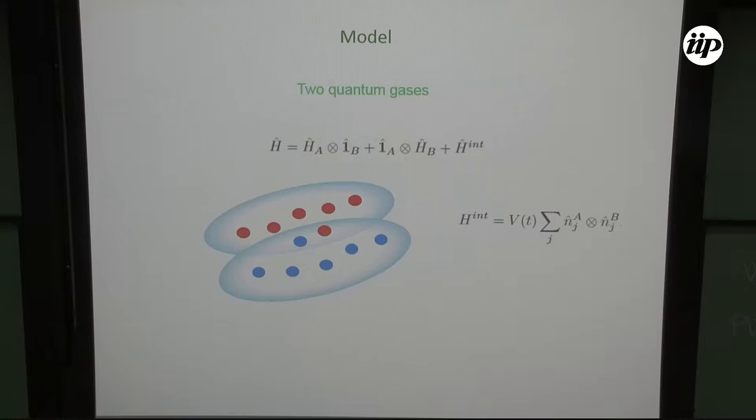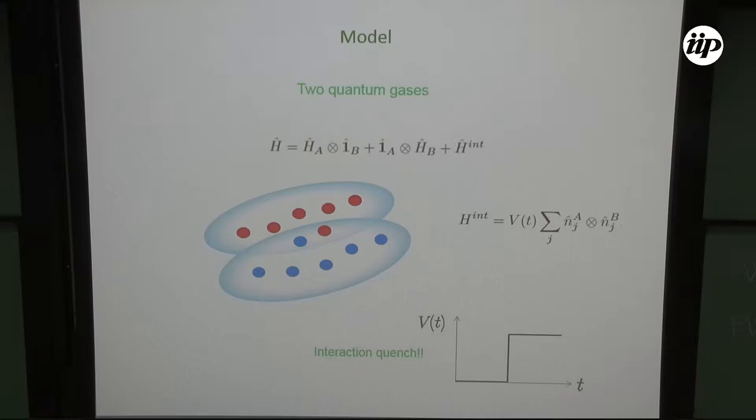The model consists of two quantum gases — two bosonic species in an optical lattice. We have a Hamiltonian for quantum gas A, a Hamiltonian for quantum gas B, and then an interaction part. We switch on the interaction between them, which initiates a non-equilibrium process, and the idea is to estimate the mixing of these two quantum gases.